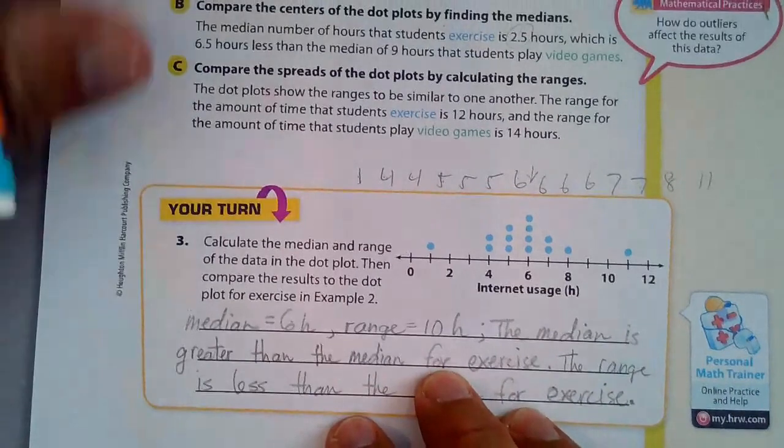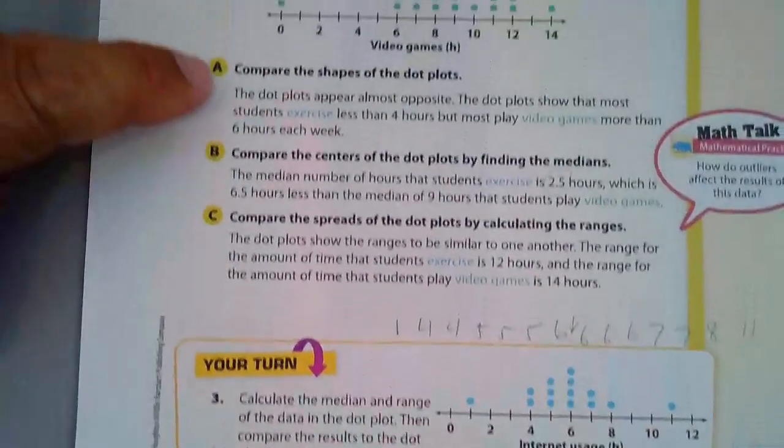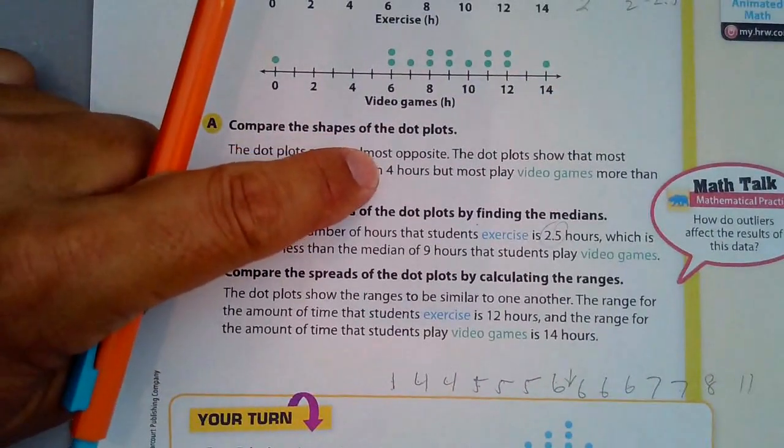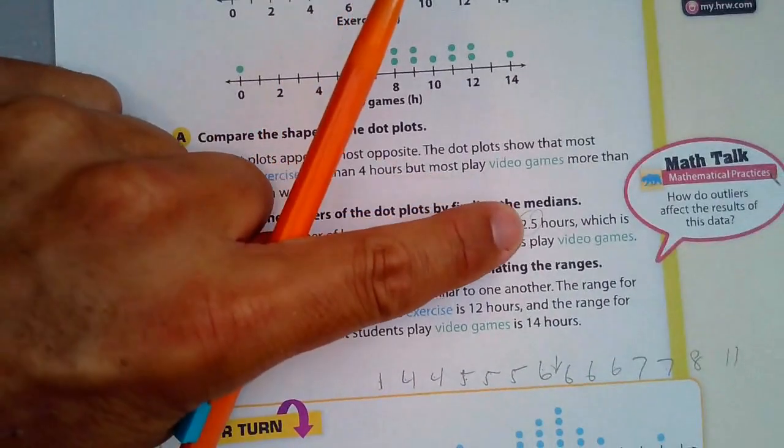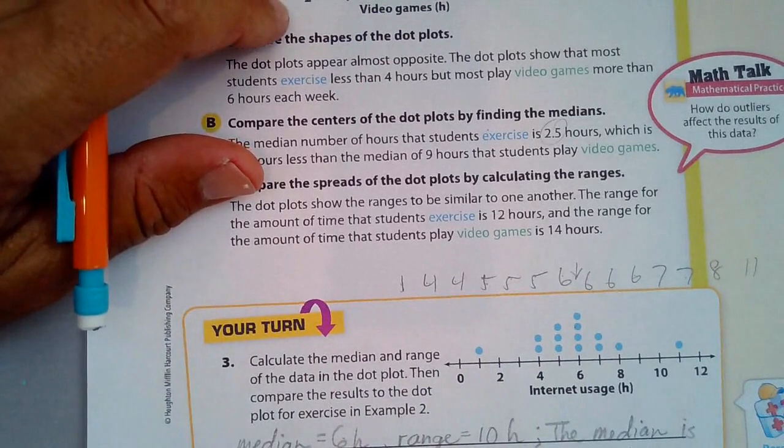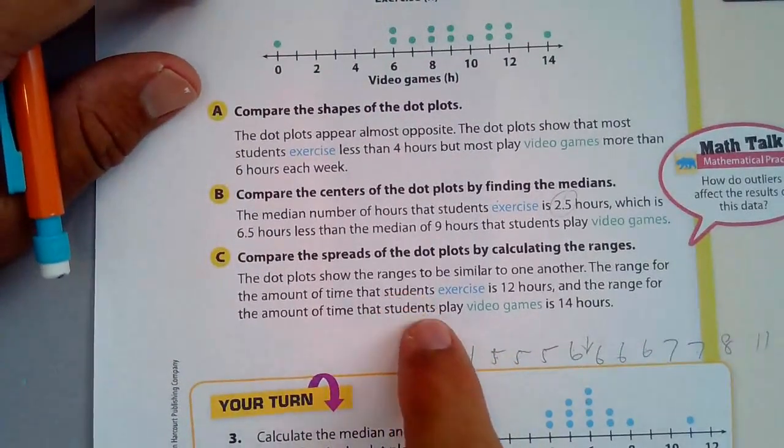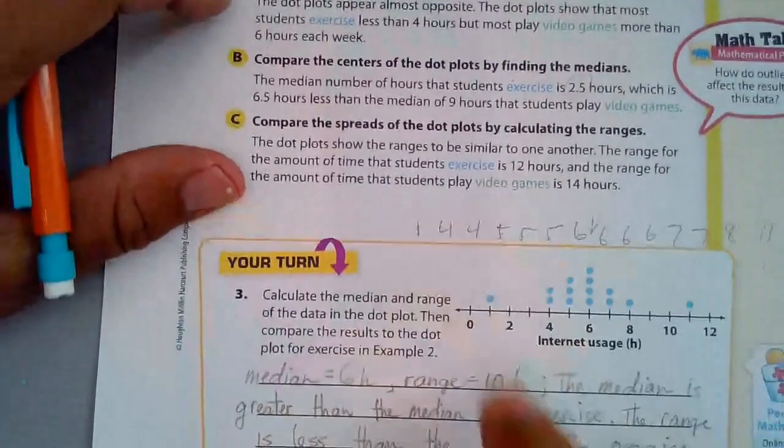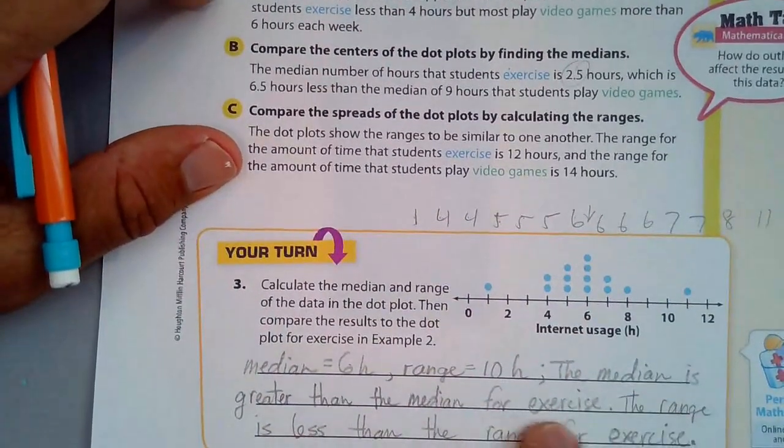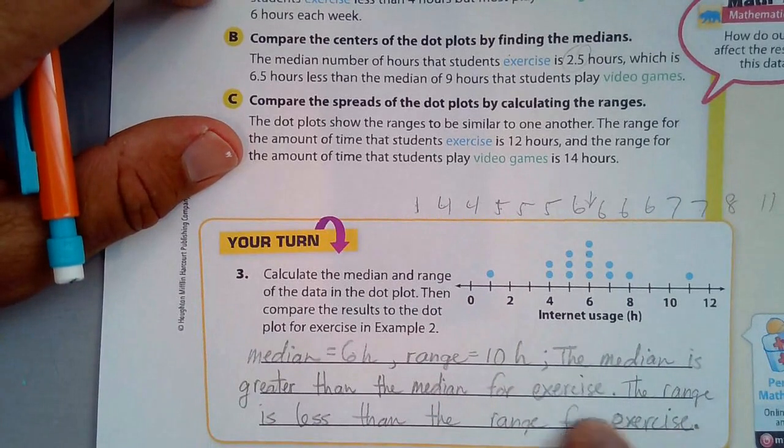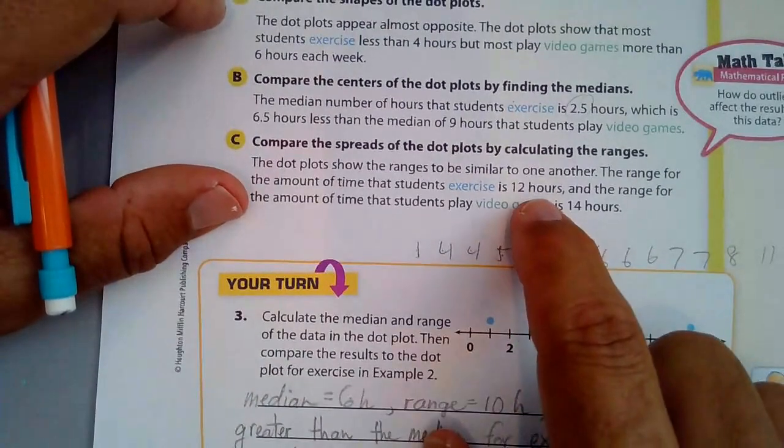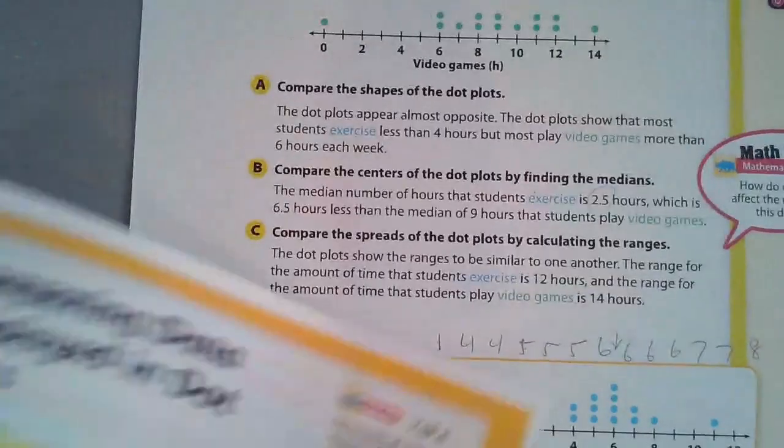As we look at this and compare it to exercise, the median was 2.5 right there and the median here is 6. The range is 10 and the range here was 12 for exercise. So median is greater than the median for exercise, correct? And the range is less than the range for exercise because that's 10 and the other one was 12. And that's what you got to know about all of this dot,